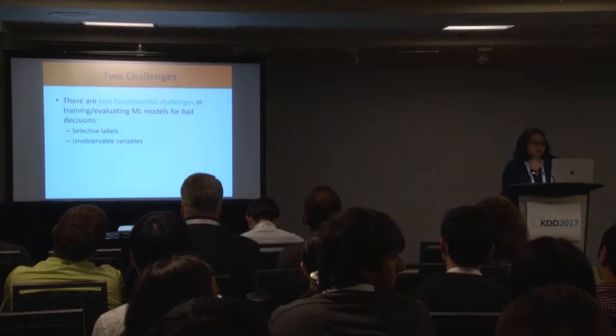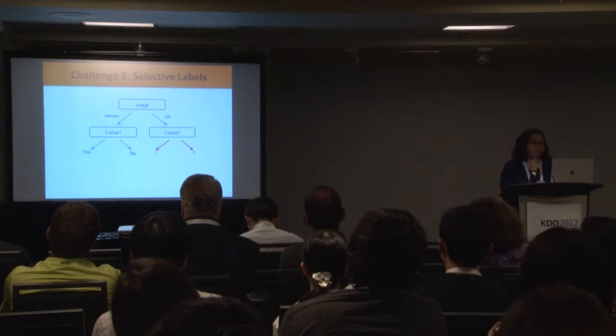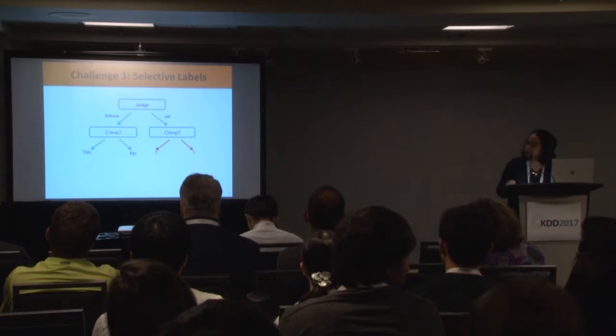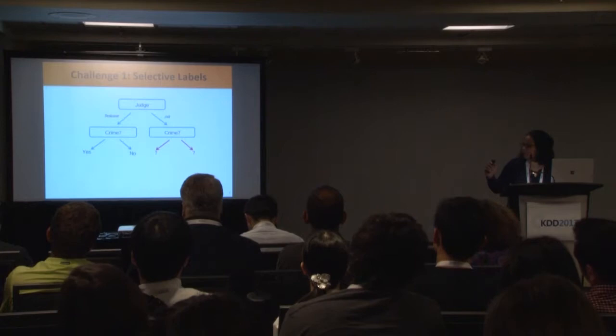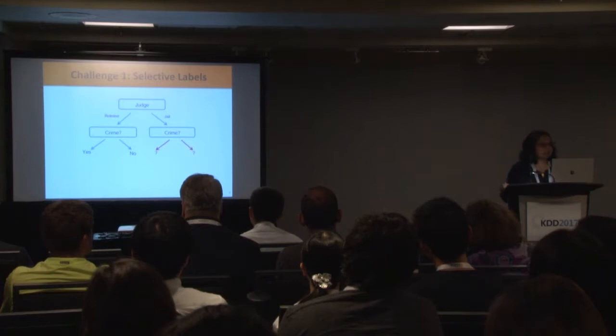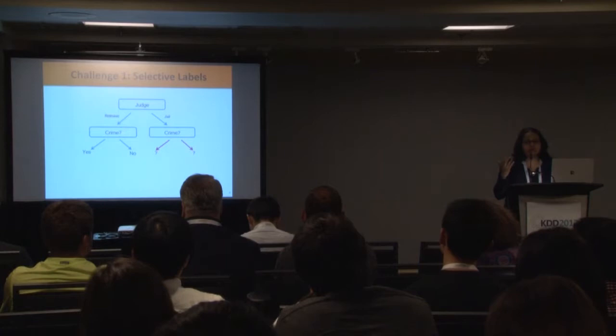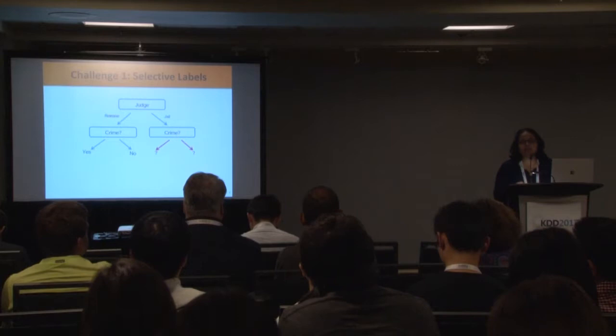The two challenges we encounter are called selective labels and the influence of unobservable variables. In the selective labels problem, a defendant appears before a judge who decides to release or jail them. When released, we can observe if the defendant commits a crime. But when someone is jailed, we do not know whether that defendant, if released, would have committed a crime — that is where the counterfactual makes it harder to have labels for a random sample of the population.